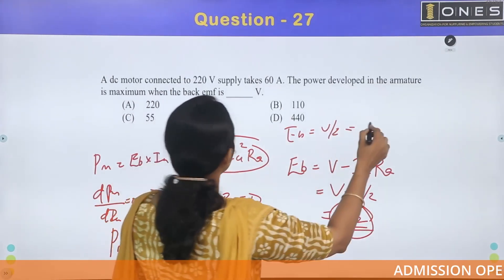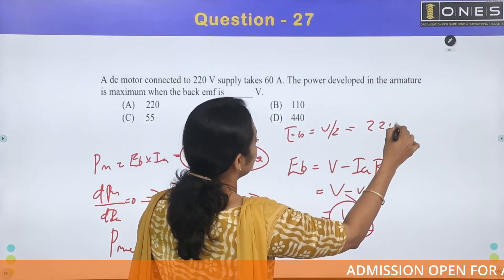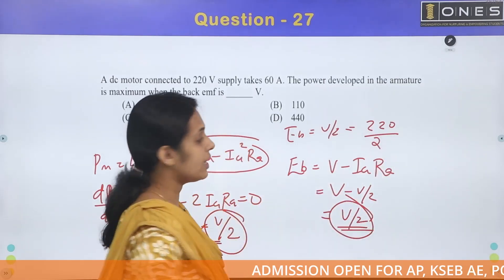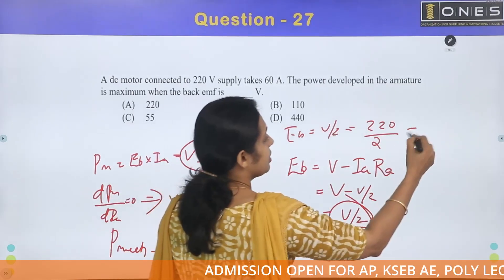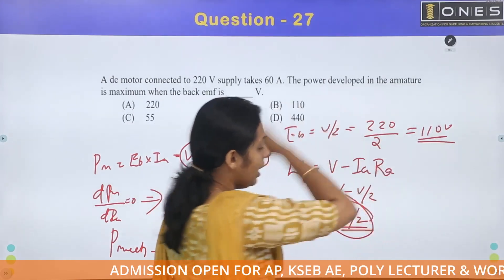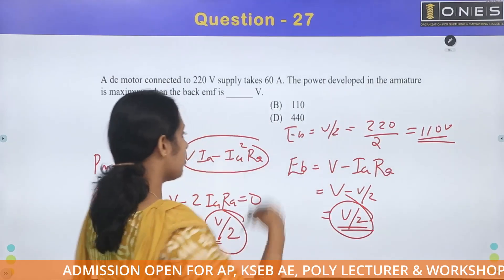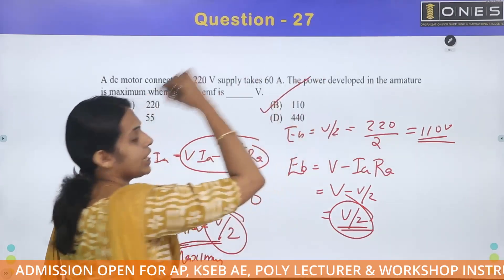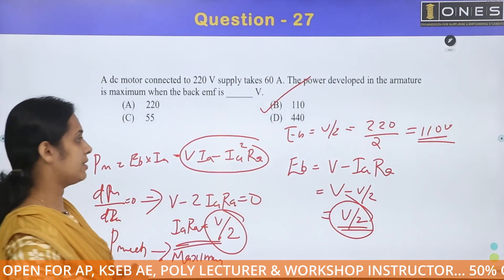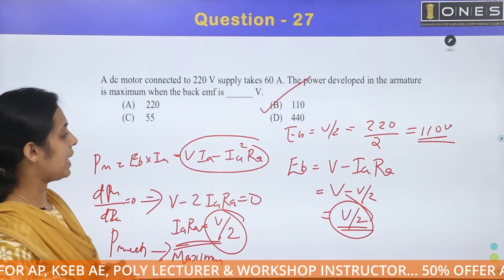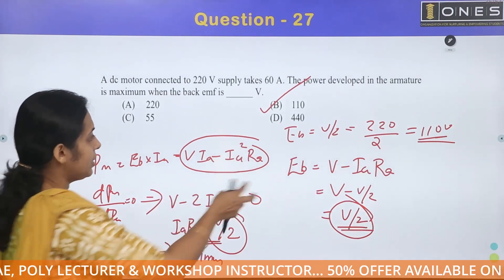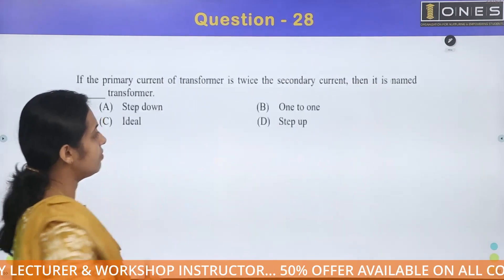Applying supply voltage of 220V: half the value is 110V. So back EMF is 110V. The power developed in the armature is maximum when back EMF equals 110V. Option B is the correct answer: 110V.